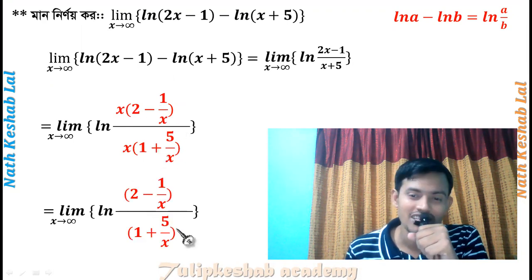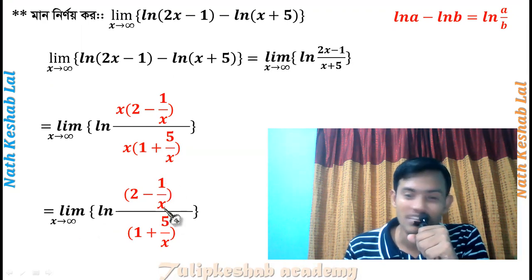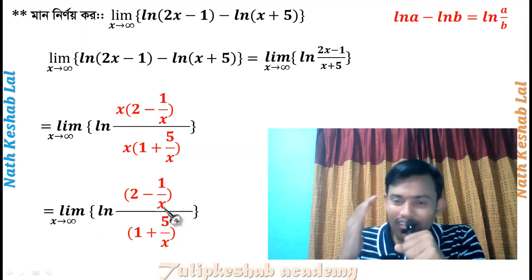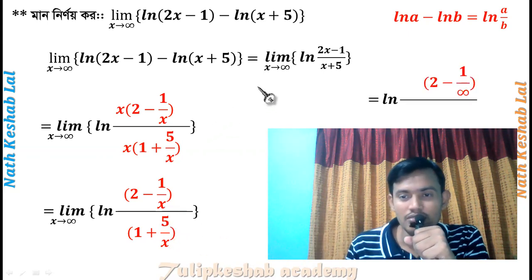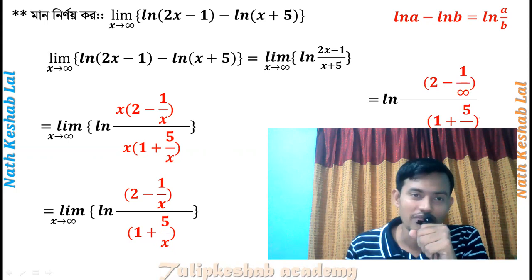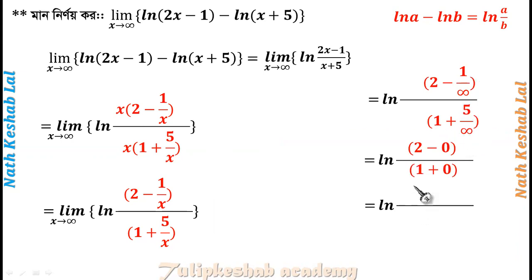We get one plus five over x in the denominator. As x tends to infinity, something divided by infinity gives zero — so something by infinity is zero. That's the key substitution here.